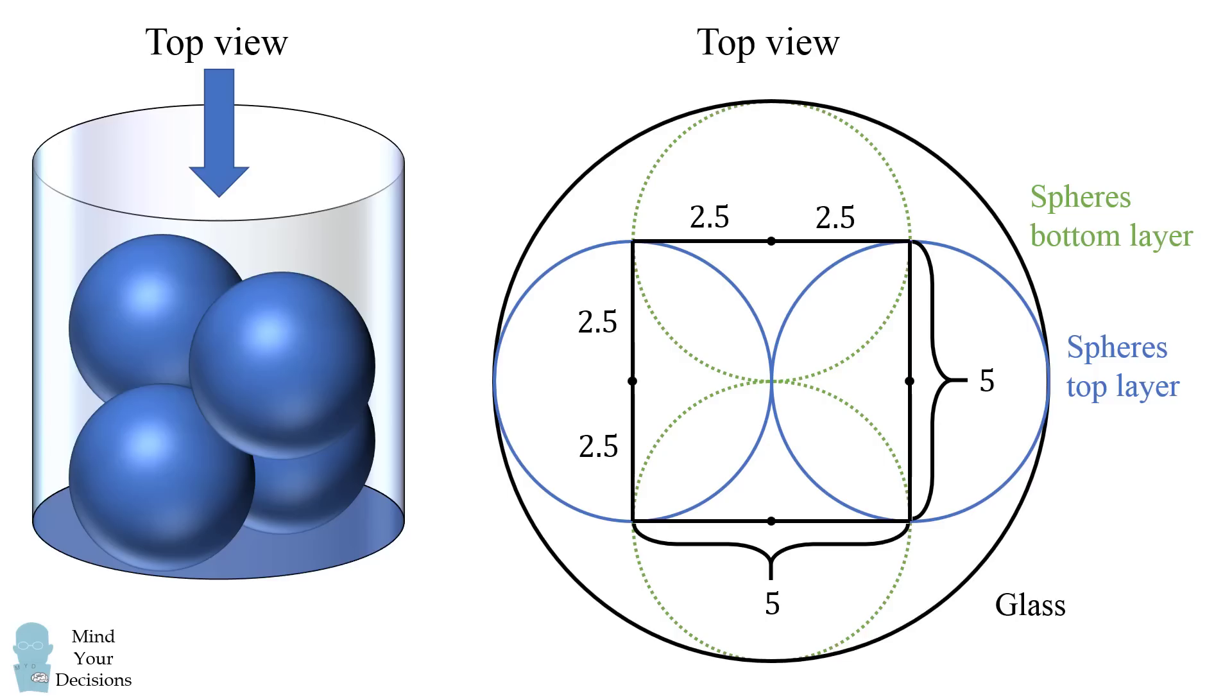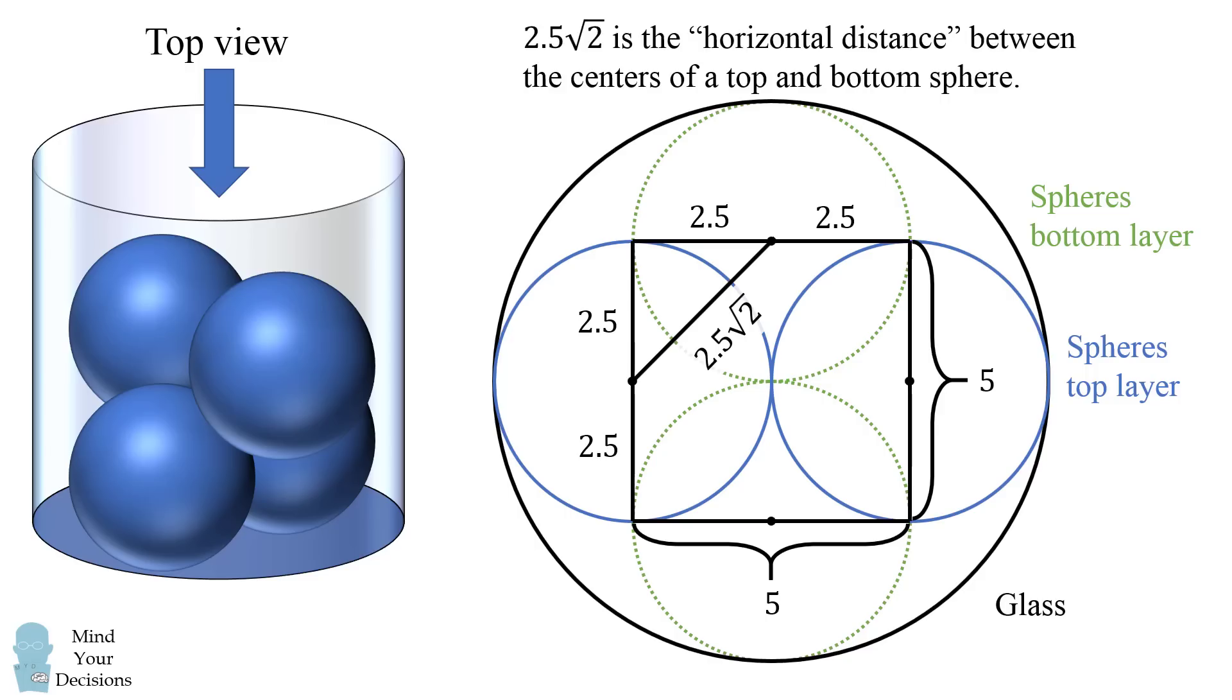From this diagram, we can then consider the horizontal distance between the center of a sphere in the top layer and the center of a sphere in the bottom layer. We have a right triangle where each side is 2.5. Therefore, the hypotenuse will be 2.5 times the square root of 2. So we deduced that 2.5√2 is the horizontal distance between the centers of a top and bottom sphere.